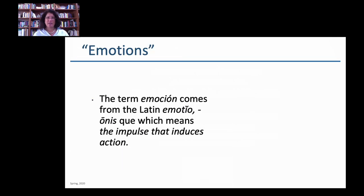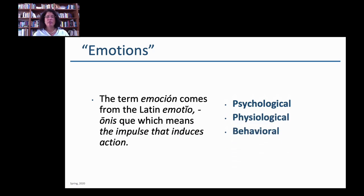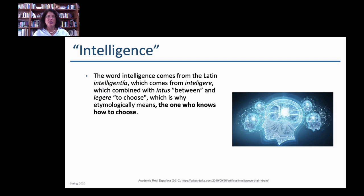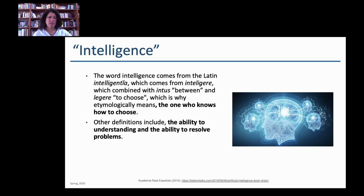Emotions — we talked about emotions being something that impulses you to take action. We can interpret this at physiological, psychological, and behavioral levels. The word intelligence, if emotion means to move or impulse somebody towards action, the real hardcore definition that comes from Latin basically means the one who knows how to choose — which is interesting given that there is no decision without emotions. So we see a really clear connection here between general intelligence and emotions.